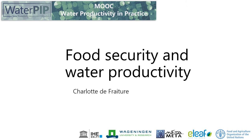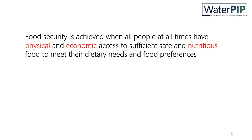But first let's turn to the term food security. According to the generally accepted definition as formulated by FAO in 1996, food security is achieved when all people at all times have physical and economic access to sufficient, safe and nutritious food to meet their dietary needs and food preferences. There are three important elements in this definition: physical access, economic access, and nutritious food.